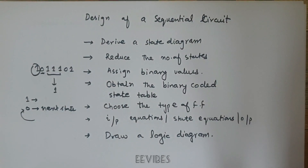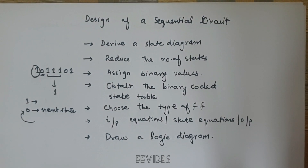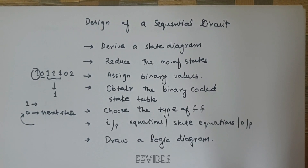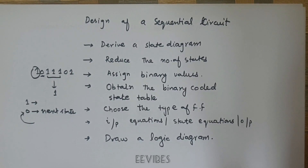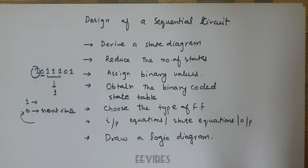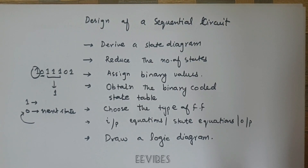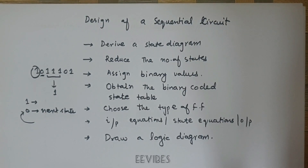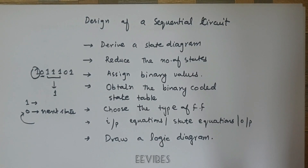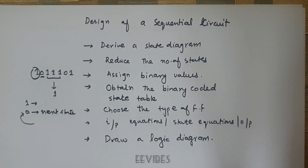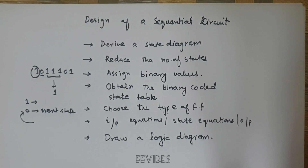Hi, this is Asma Mushtaak from EE Vibes. In this lecture you will learn how we can design a sequential circuit given information in phrasal or verbal form. We want to design a circuit that detects the number of ones in an input string, and whenever we encounter three or more consecutive ones the output should be one; otherwise, the output should be zero.